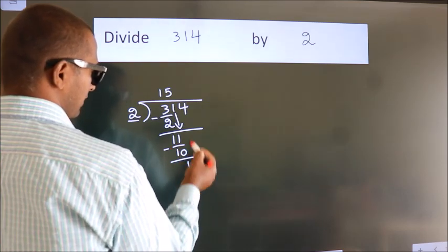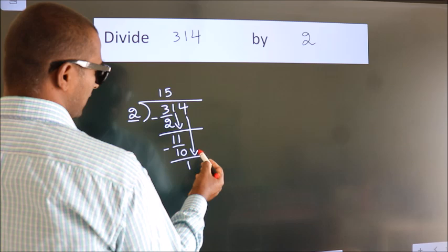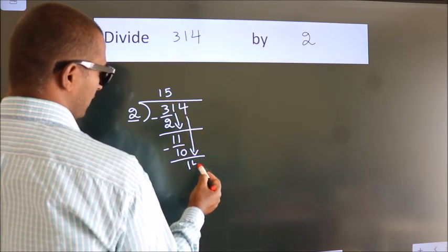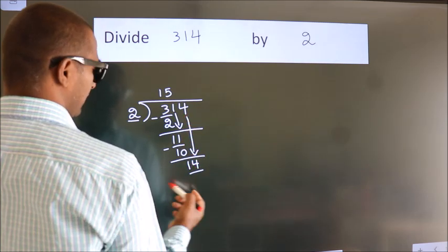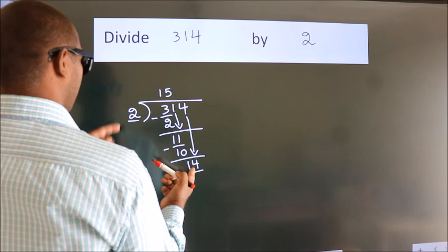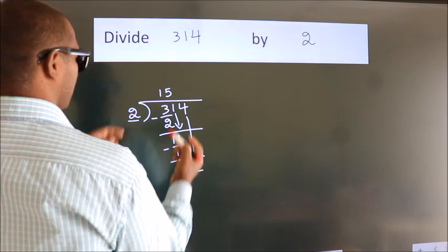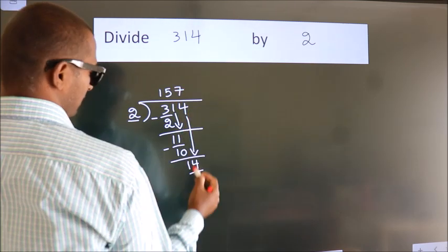After this, bring down the beside number. So, 4 down. So, 14. When do we get 14? In the 2 table: 2 7s 14.